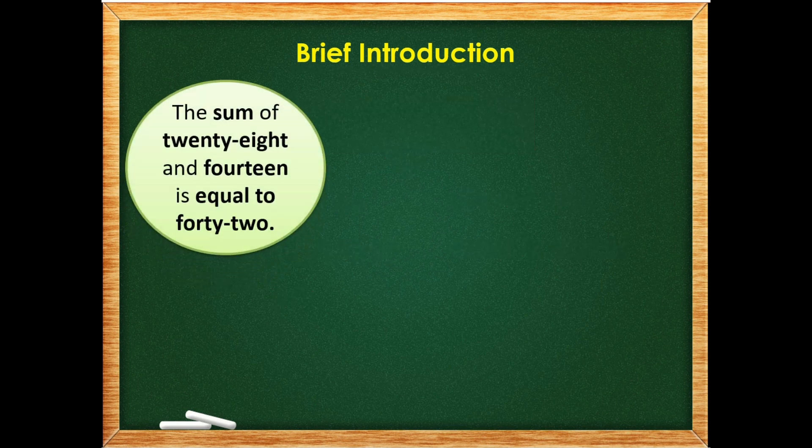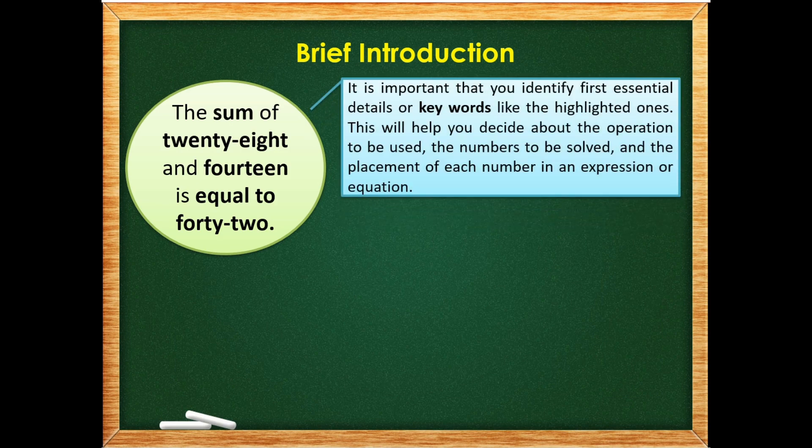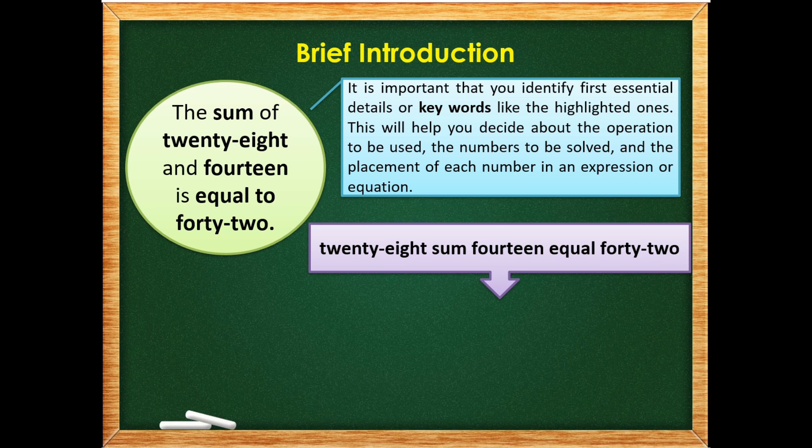Now, let's study the following examples. Example number one. The sum of 28 and 13 is equal to 42. It is important that you identify first essential details or keywords like the highlighted ones. This will help you decide about the operation to be used, the numbers to be solved, and the placement of each number in an expression or equation. So the highlighted words are: we have 28, sum, 14, equal to 42.